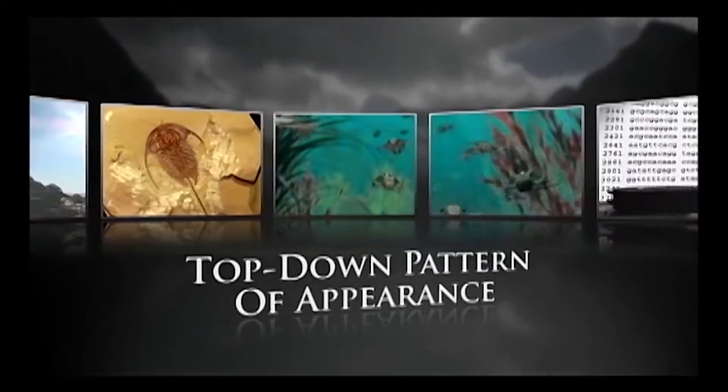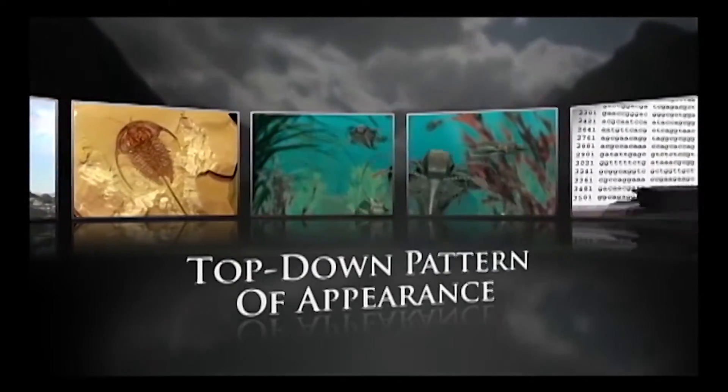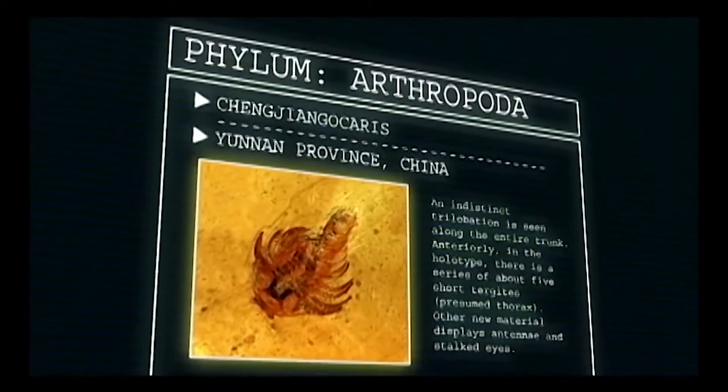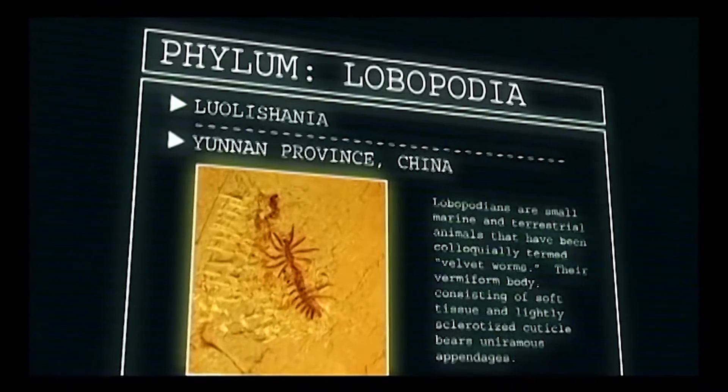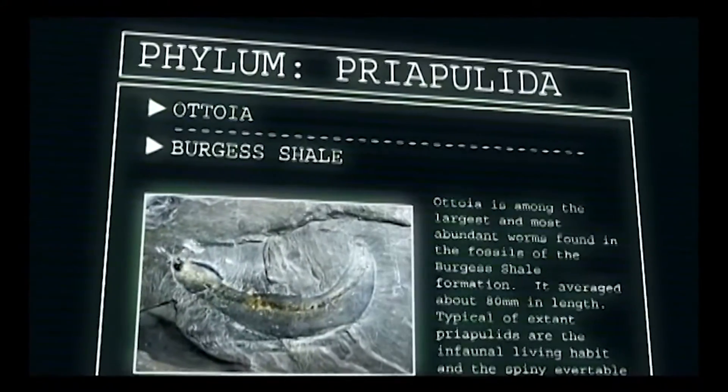In Darwin's picture, you'd have little differences accumulating to big differences. The top-down picture turns that on its head. You find first you get new phyla, and then you have some variations on those themes over time. But the new forms — the big differences — appear right from the beginning in the fossil record.